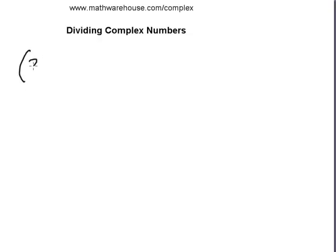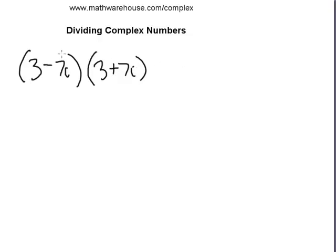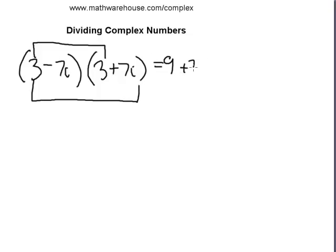Let's do at least one more problem practicing complex conjugates. For 3 minus 7i, the complex conjugate is simply 3 plus 7i. Multiplying them using FOIL: the firsts are 3 times 3, or 9; the outers are 3 times 7i, or 21i; the inners are negative 21i; and the lasts are negative 7i squared.